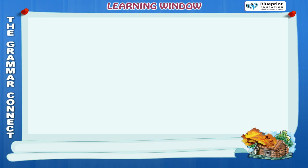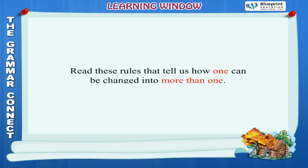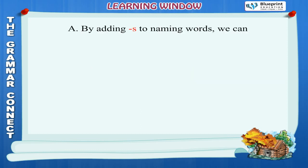Read these rules that tell us how one can be changed into more than one. Rule A: By adding S to naming words, we can change one into more than one.